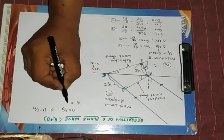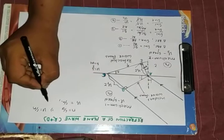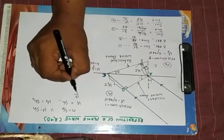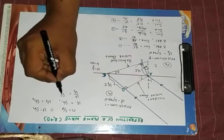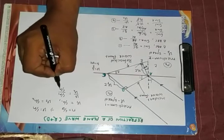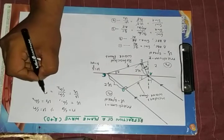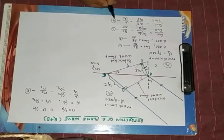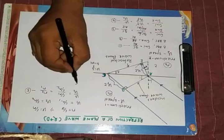v1 by v2 equals c by n1 divided by c by n2, that is equal to n2 by n1. Now from equations 4 and 5, I can write